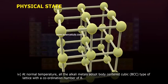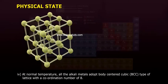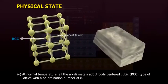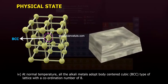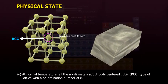4. At normal temperature, all the alkali metals adopt body-centered cubic (BCC) type of lattice with a coordination number of 8.